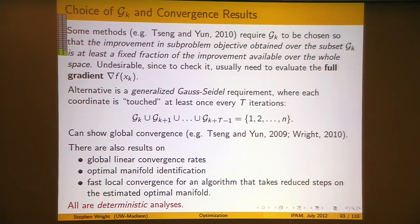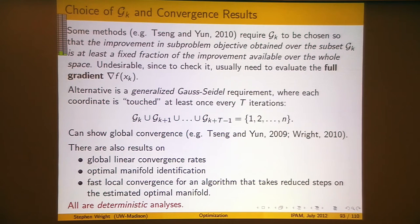The point I want to make is that all this flavor of algorithm has analysis that is deterministic in nature — you're not assuming randomness in choosing the gks. All you're assuming is that every now and then you look at every component, at least once.